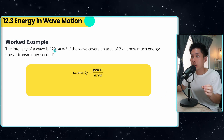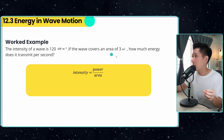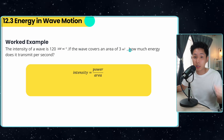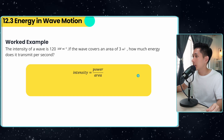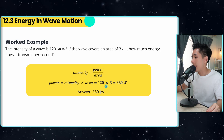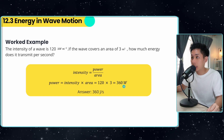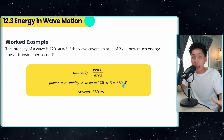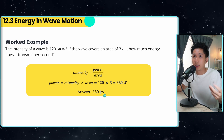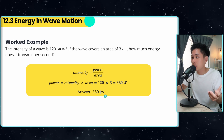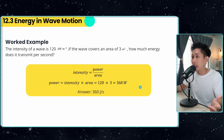Here's a worked example. The intensity is 120 kilowatts per metre squared. If the wave covers an area of 3 m², how much energy is transferred? Intensity and area are given, so we calculate the power: 360 watts. But that's power, not energy. Power is defined as energy transferred per second, so the answer is 360 joules per second.